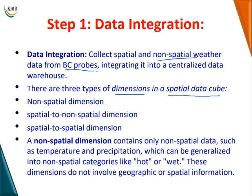There are three types of dimensions in a spatial data cube. First is non-spatial dimension, which contains only non-spatial data such as temperature and precipitation, which can be generalized into a non-spatial category like hot or wet. These dimensions do not involve geographic or spatial information.